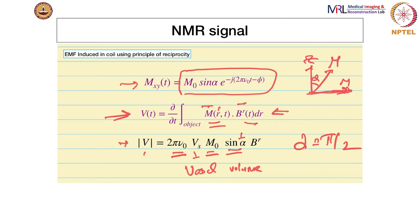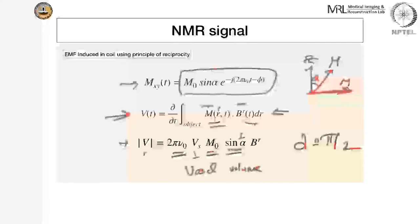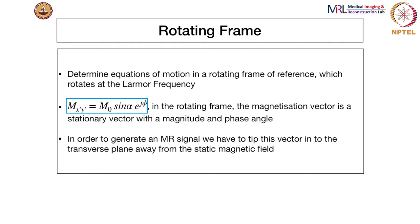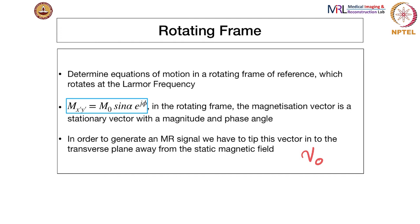So the next step is, in order to get a good signal, we tip this magnetization — which is now precessing around the direction of the static magnetic field — into the plane perpendicular to the direction of the static magnetic field. There is one other concept called the rotating frame of reference. If the Mxy component is in the plane precessing at frequency nu-0 (a very high radio frequency), we can let the coordinate system rotate at this frequency, and then the magnetization is basically just a stationary vector with a magnitude and phase angle.